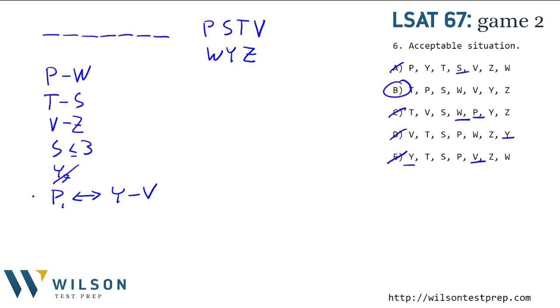This condition where P is 1st if Y is before V is pretty interesting because it changes around the direction of these two, and they may have relationships with other things. So I want to split this into two different worlds, one where P is 1st and one where P is not 1st, and see how these work out. So over here I'll say P is 1st, and here I'll say P is not 1st. Now I don't need to say P is before W anymore because of course P is before W, it's 1st.